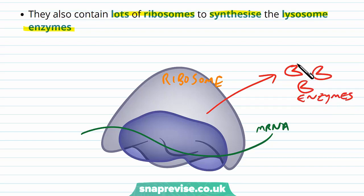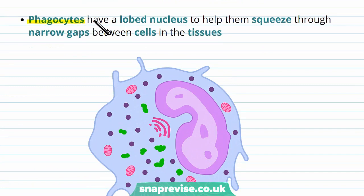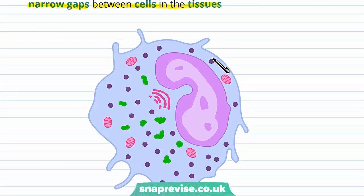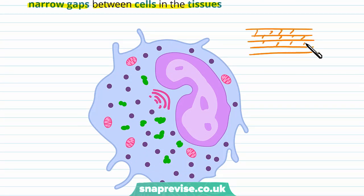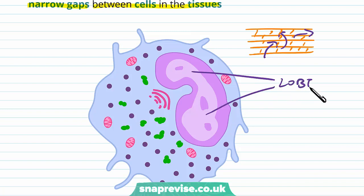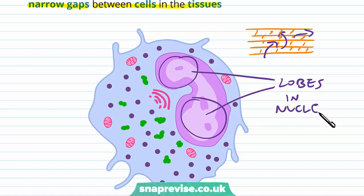Phagocytes have a lobed nucleus — lobed means it's broken up into different points, though slightly connected. The reason for this is it helps the cell squeeze through narrow gaps between cells in tissues. Sometimes the phagocyte might be in a tissue with very highly organized cells like in the skin, so there aren't many spaces to move around, and the cell has to squeeze between gaps to arrive at where the pathogen is. So having a lobed nucleus — for example with two distinct lobes — allows it to change shape and squeeze into narrow gaps.